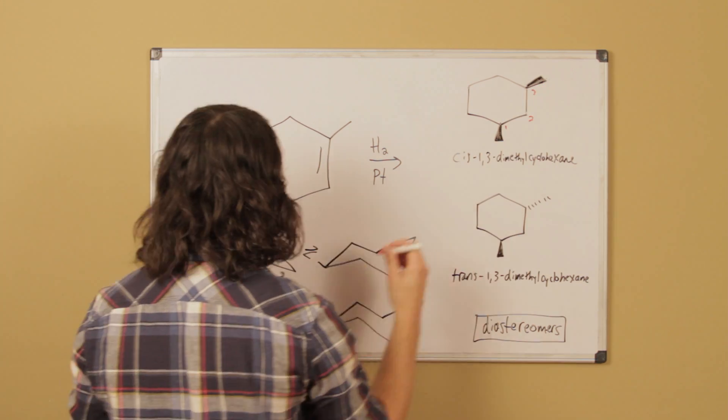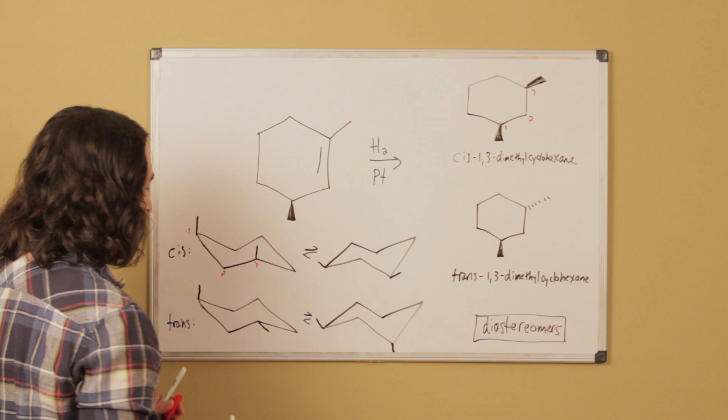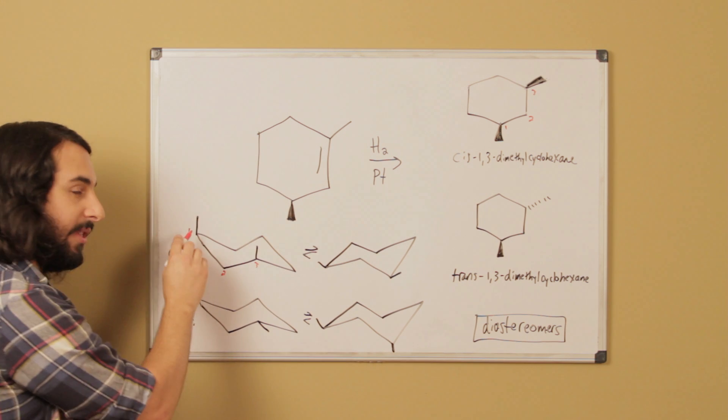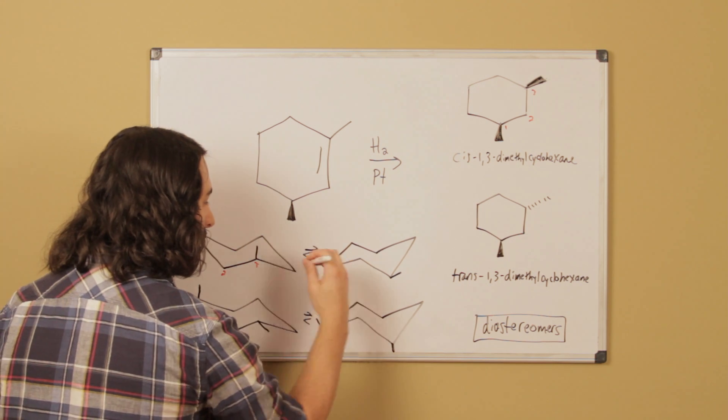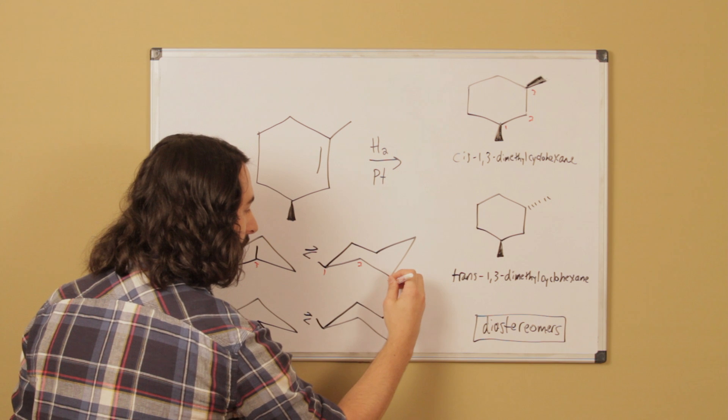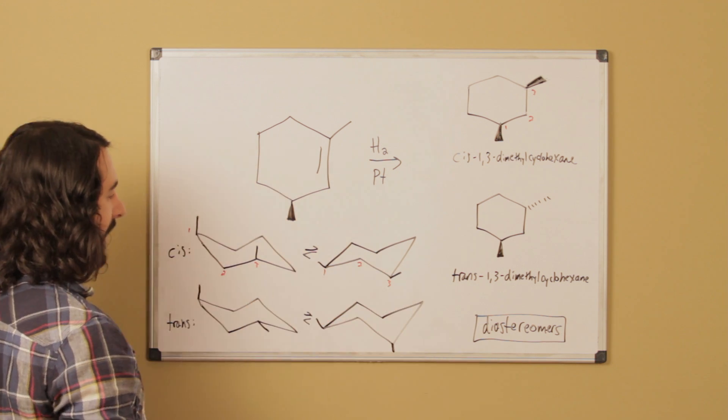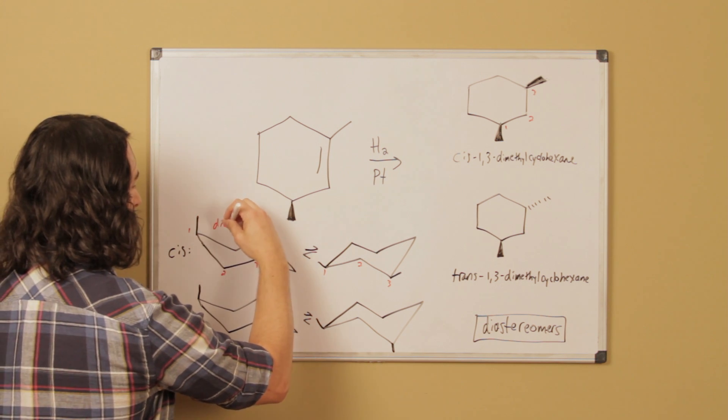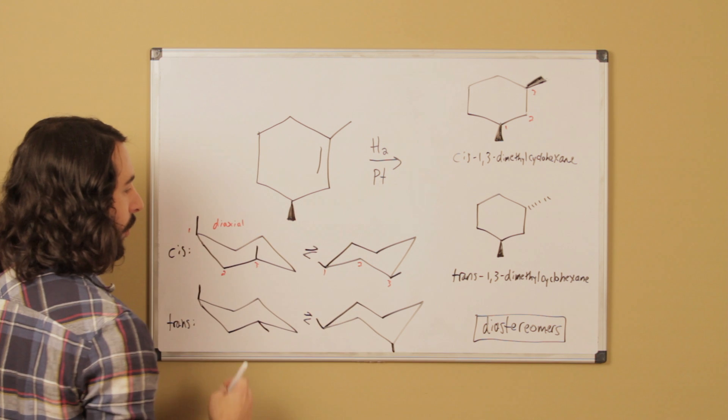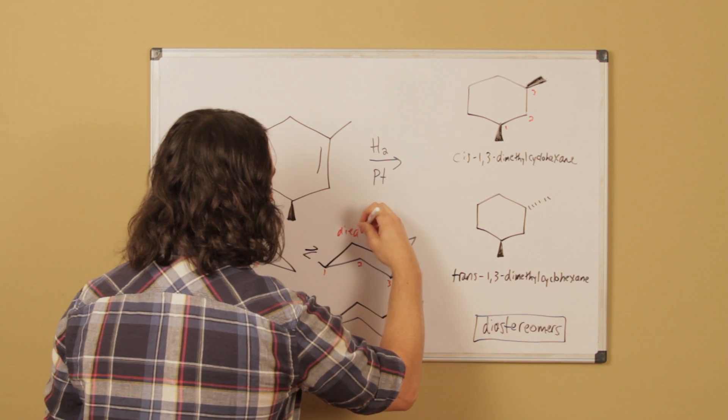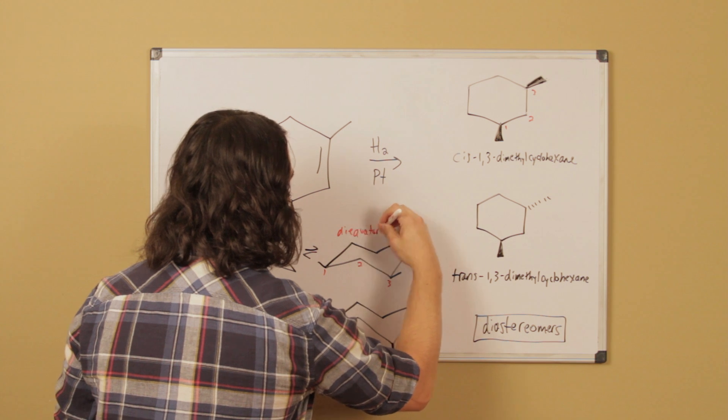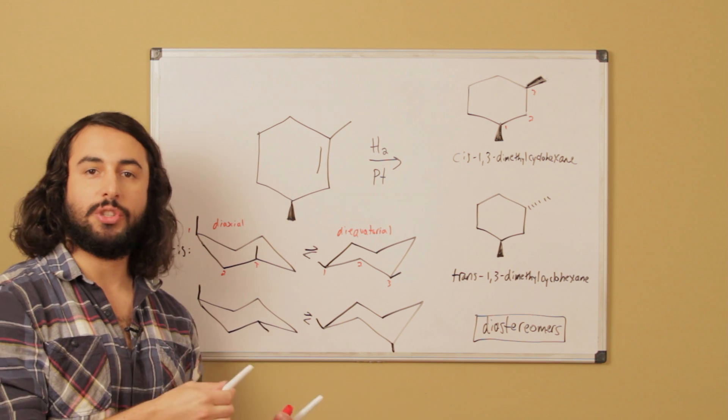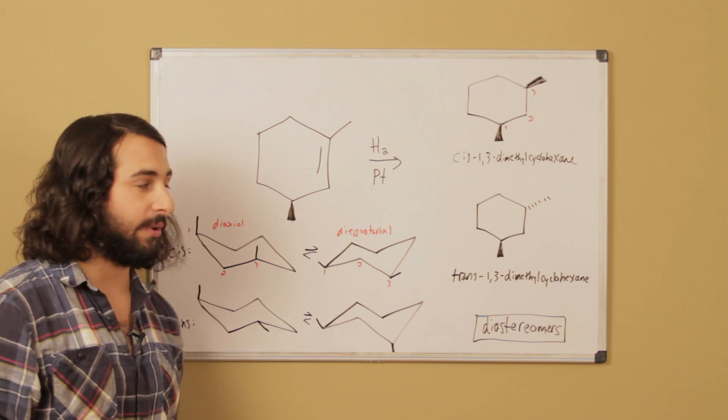When this chair flips, this is going to be the resulting chair because the leftmost carbon remains the leftmost carbon, then you continue to number in the same way. Here this one is diaxial, which makes this one diequatorial. That is the case because any substituent that is axial on one chair will become equatorial on the other chair and vice versa.